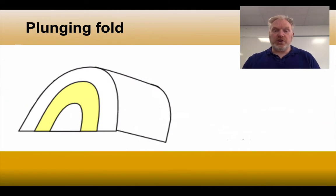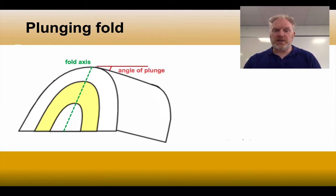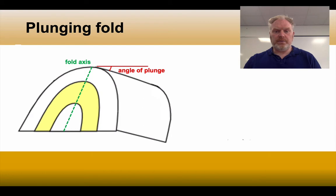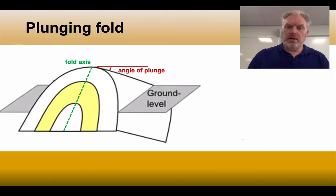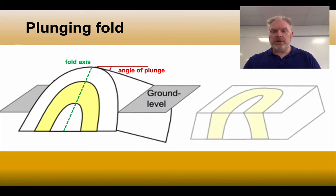In reality, we often see something slightly different — what we see is a plunging fold. A plunging fold will still have a fold axis, but in this case the fold axis will be inclined. It's this inclination of the axis that we call plunge, and the angle of plunge is the number of degrees from horizontal that the axis has been tilted. It doesn't sound like much of a change, but it does change the outcrop pattern. If we then have a ground surface and erode away the material above that ground level, what we see on a map is something that looks like this.